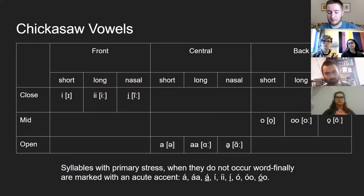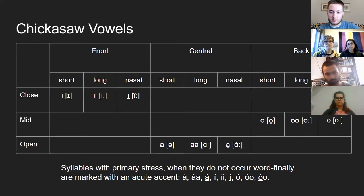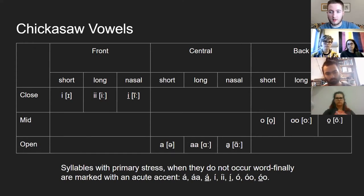Now I'll move on to the vowels. Chickasaw actually has a pretty small vowel inventory. There are only three main vowel qualities: i, a, and o. However, each of these three vowel qualities has a short, long, and nasal version. Additionally, the short versions of these vowels actually become centralized quite a lot. So i is centralized the least and simply becomes 'ih.' O is centralized so that it becomes a vowel closer to the vowel in the English word 'foot.' And ah becomes fully centralized to a schwa.